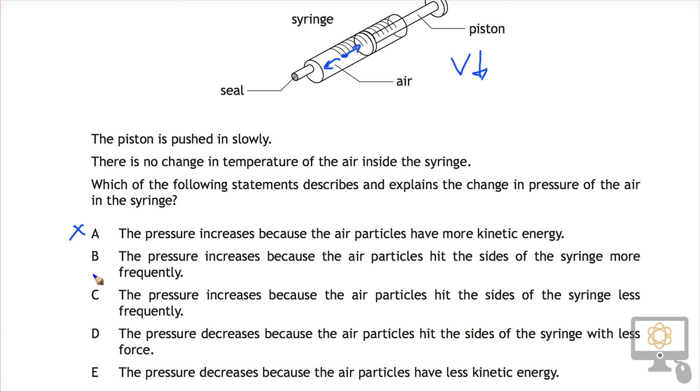Let's just have a look at the others. It increases because the air particles hit the sides less frequently? No. The pressure decreases because the particles hit the sides of the syringe with less force? The only thing that would change the force would be the speed of the particles, and that's not changing. And the pressure decreases because the particles have less kinetic energy? Also incorrect. So there we go, our answer is B.